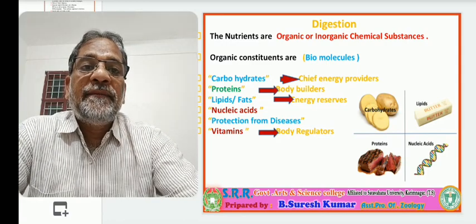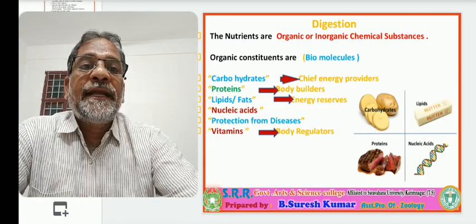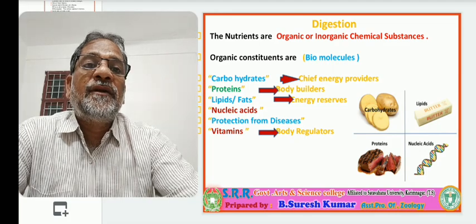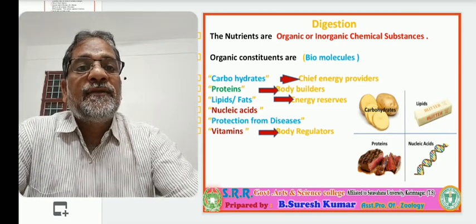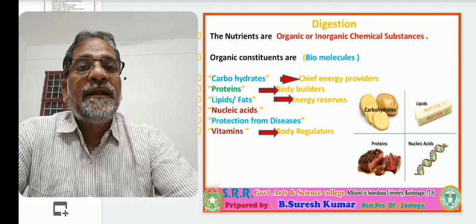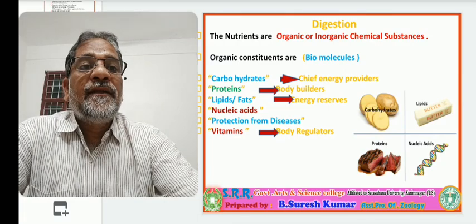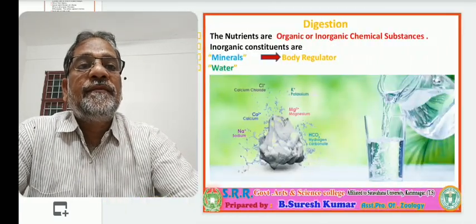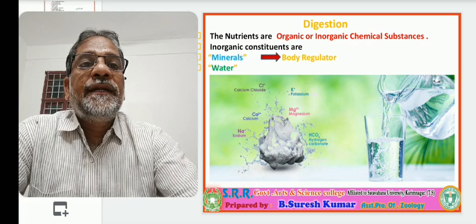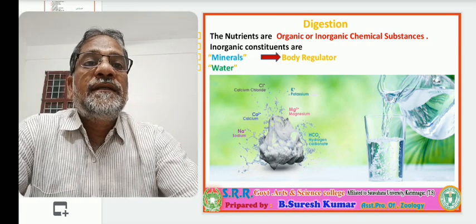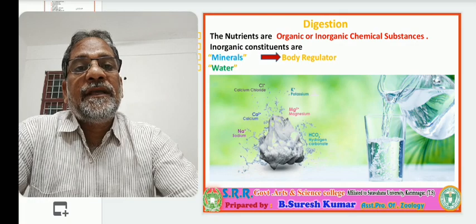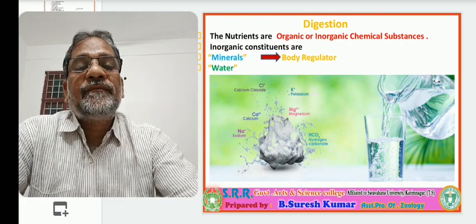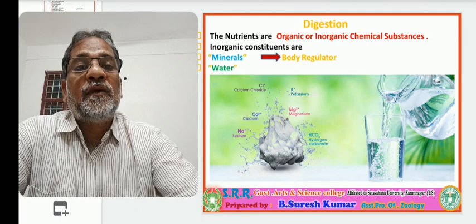The organic components of nutrients present in food material are carbohydrates, proteins, lipids, nucleic acids, and vitamins. These are also termed as biomolecules. The food material also includes inorganic components. The inorganic chemical substances are minerals and water.